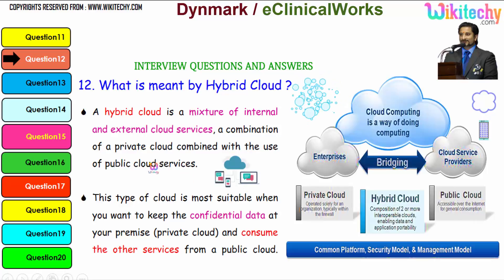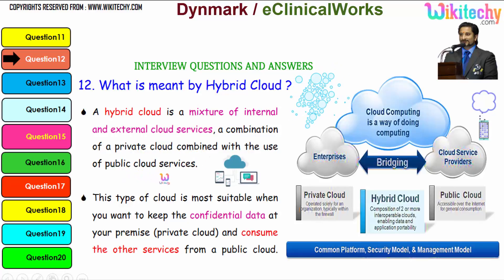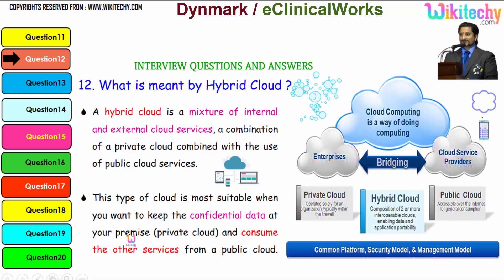By definition, a hybrid cloud is a mixture of internal and external cloud services — a combination of a private cloud combined with the use of public cloud services. This type of cloud is most suitable when you want to keep confidential data in your own environment and consume other services from a public cloud.